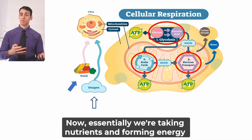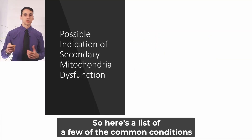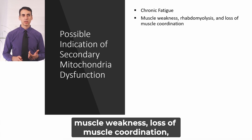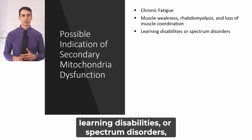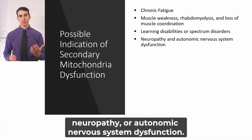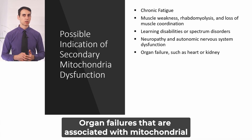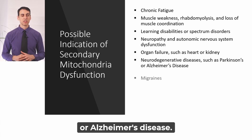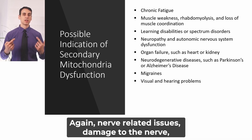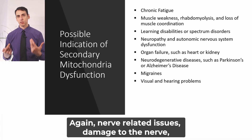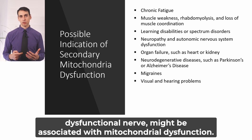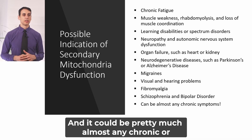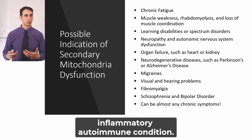Two metabolites that are left are water and CO2. Essentially, we're taking nutrients and forming energy for the cell to function. Here's a list of conditions associated with mitochondrial dysfunction: chronic fatigue, muscle weakness, loss of muscle coordination, learning disabilities or spectrum disorders, neuropathy or autonomic nervous system dysfunction, organ failures such as heart and kidney, neurodegenerative conditions such as Parkinson's or Alzheimer's disease, migraines, visual or hearing problems, nerve-related damage, fibromyalgia, schizophrenia and bipolar disorders, and pretty much almost any chronic, inflammatory, or autoimmune condition.